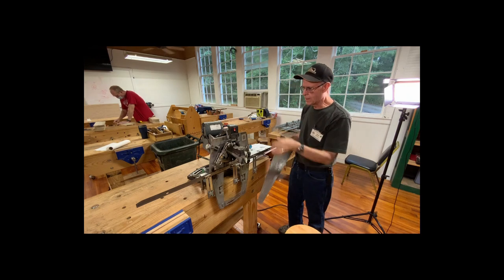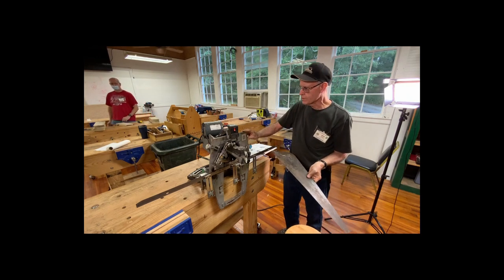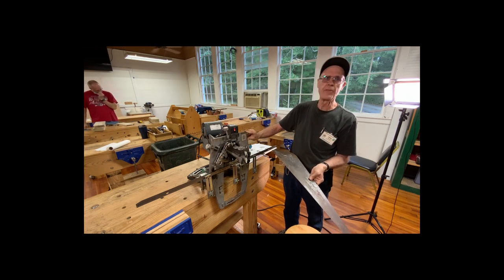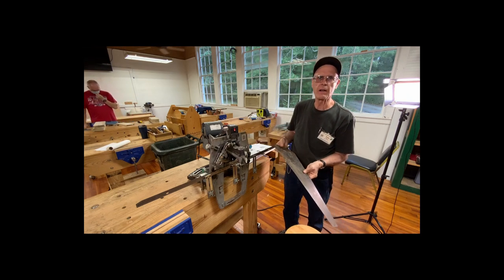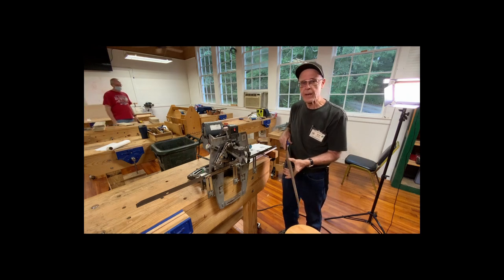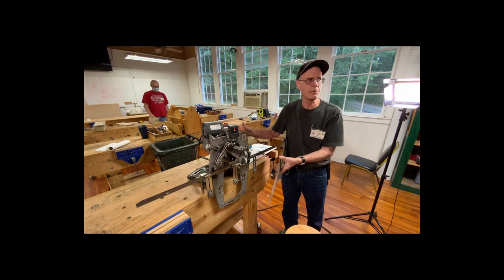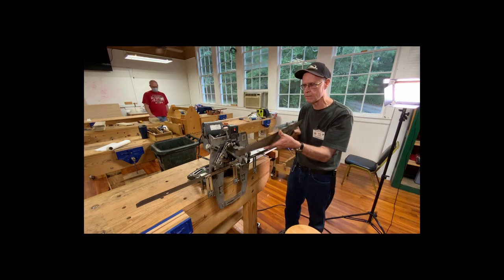And what we're going to do today on this machine here is a Foley Bell Saw SF-1000, the Saw Filer 1000, which is the last model they built. And in the past there were hundreds and thousands of these all over the country sharpening saws like this.